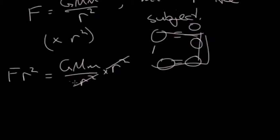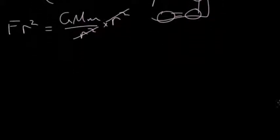So GMm on R squared times R squared. Okay, so just to write that out a bit neater. GMm. Now, the next step is...